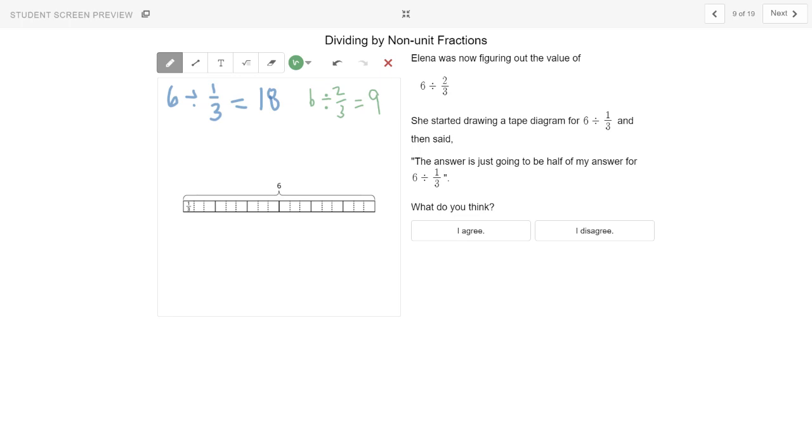Let's see if we can find that. So six divided by two-thirds, there's one group, two groups, three groups, four groups, each group is two-thirds, five groups, six groups, seven groups, eight groups, nine groups. So I see here that there are nine groups of two-thirds in six.